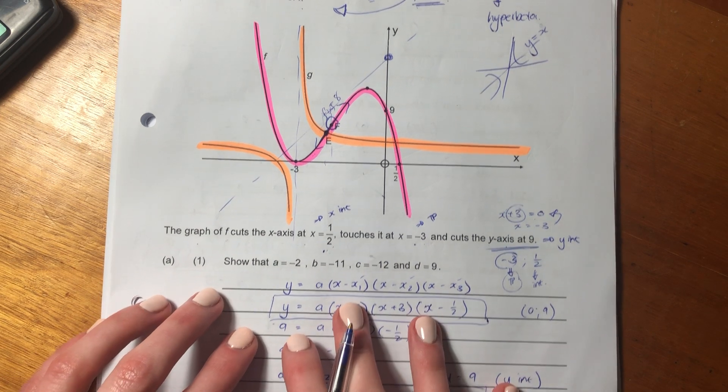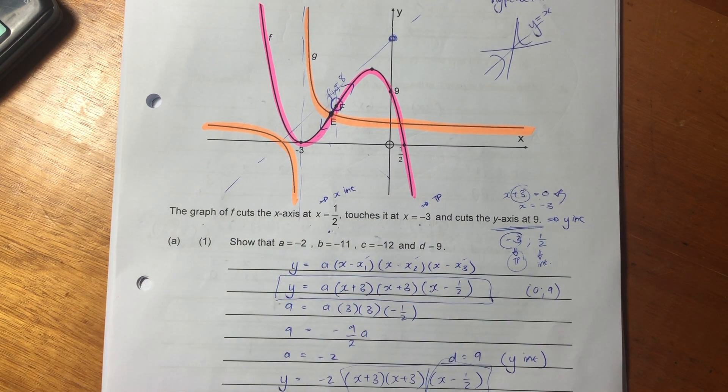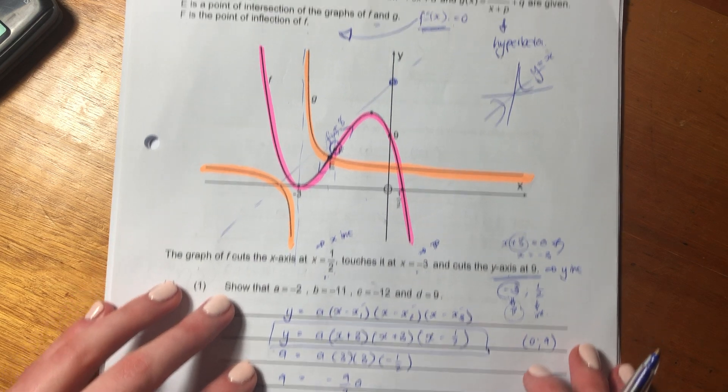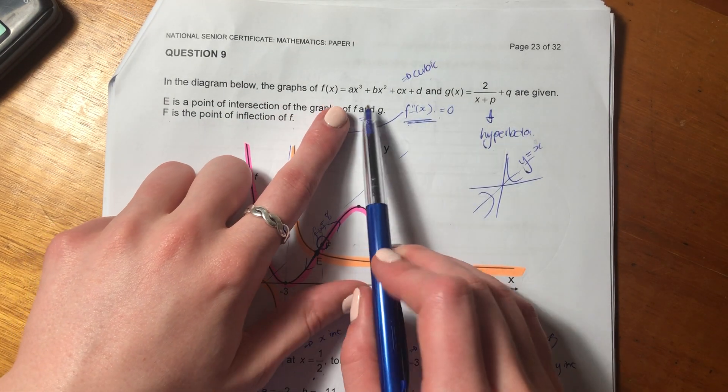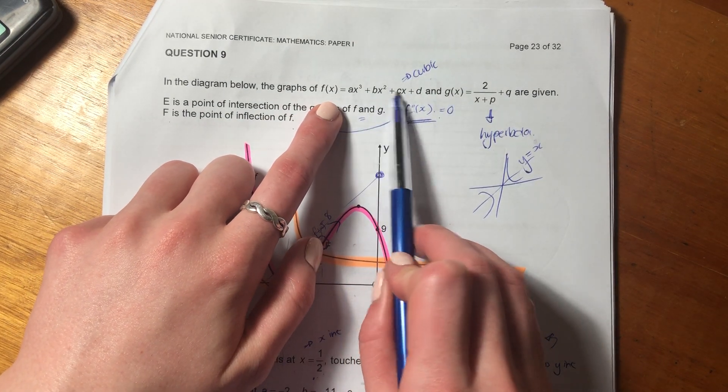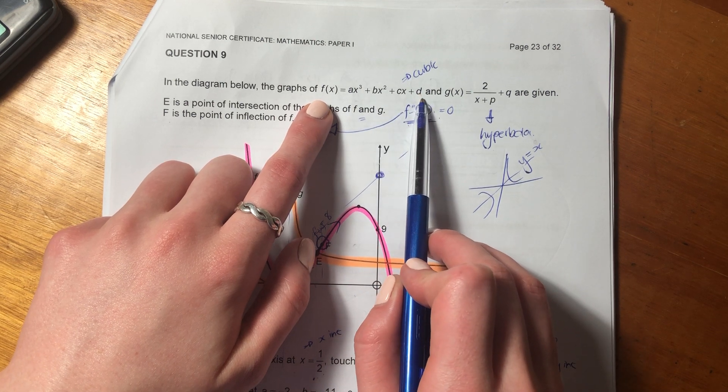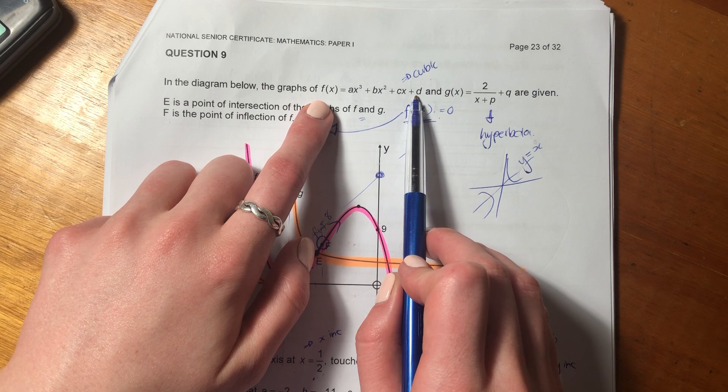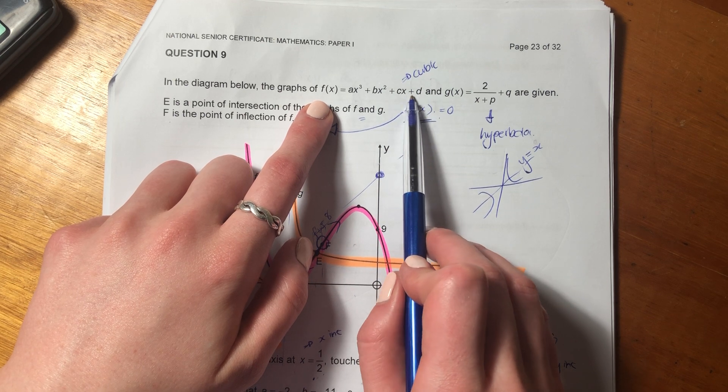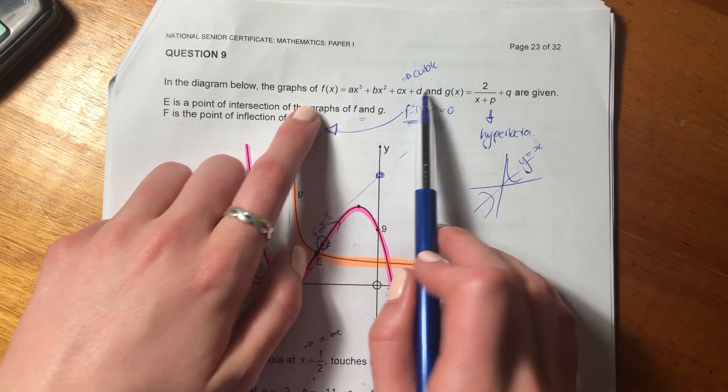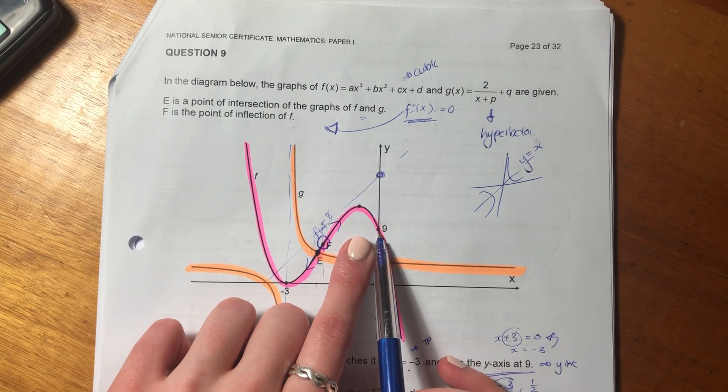Let's now get to the first question. It says show that a = -2, b = -11, c = -12, and d = 9. So what they're asking is they're effectively asking you to find the coefficients of each of these different degrees of x and the constant, which is d. Now we know that d is the y-intercept. We should always remember that for a cubic. So we know that d is going to equal 9.